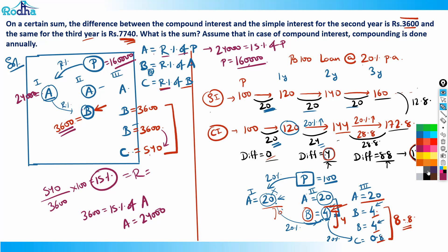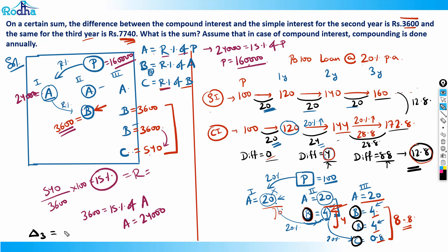One more useful result: the total difference between SI and CI after three years is 3B + C, where B is the CI–SI difference only for the second year, and C is R% of B (or equivalently (100+R)% of B minus B). This formula helps you solve many such questions quickly. Thanks for watching!